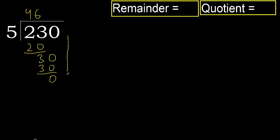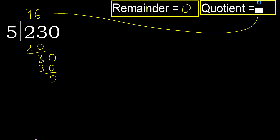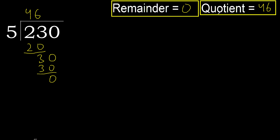The next digit is not present, therefore we finish. 230 divided by 5 is complete — the answer is here.